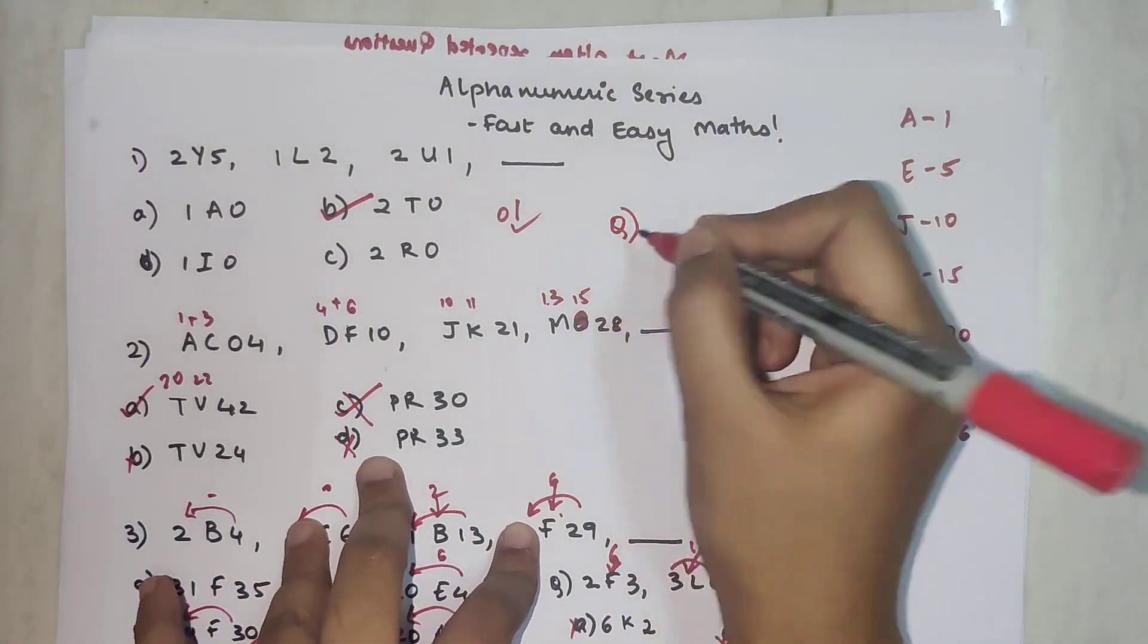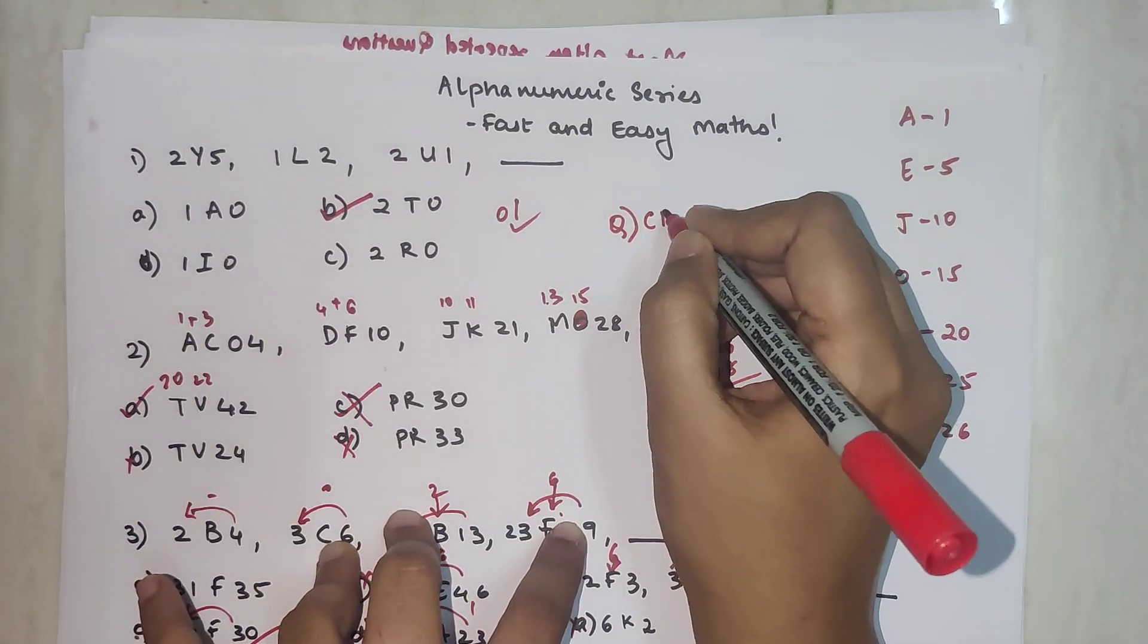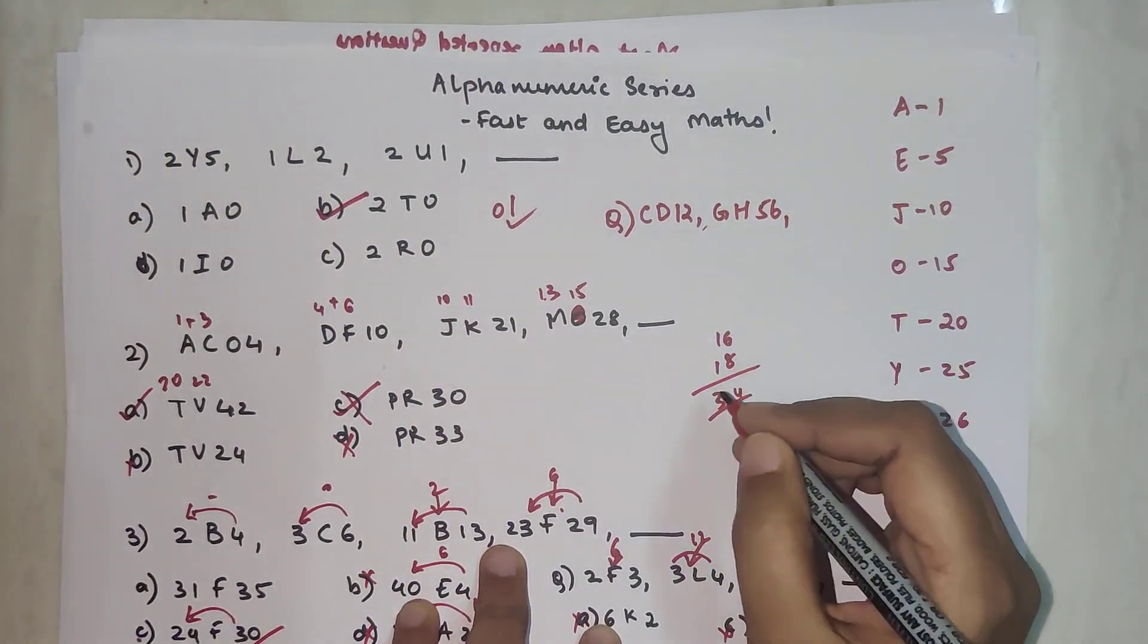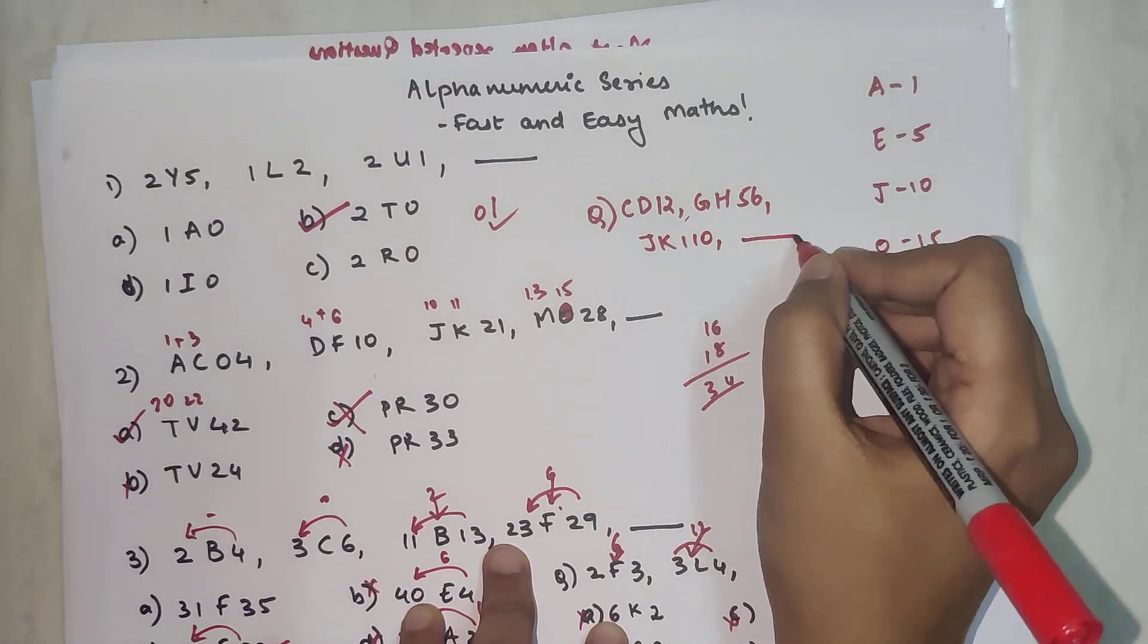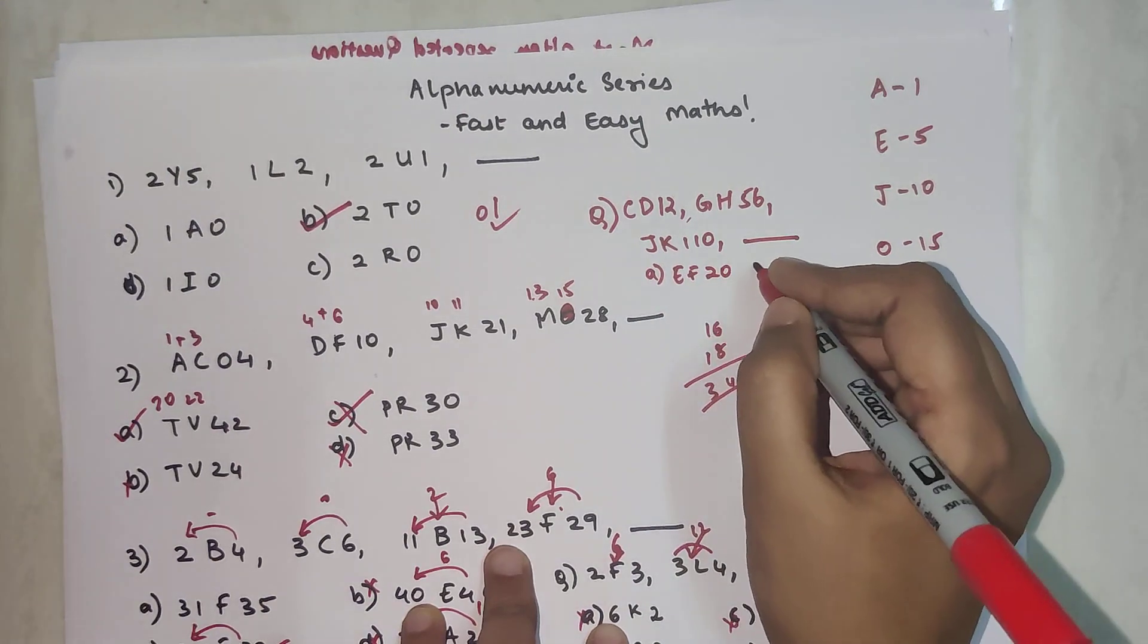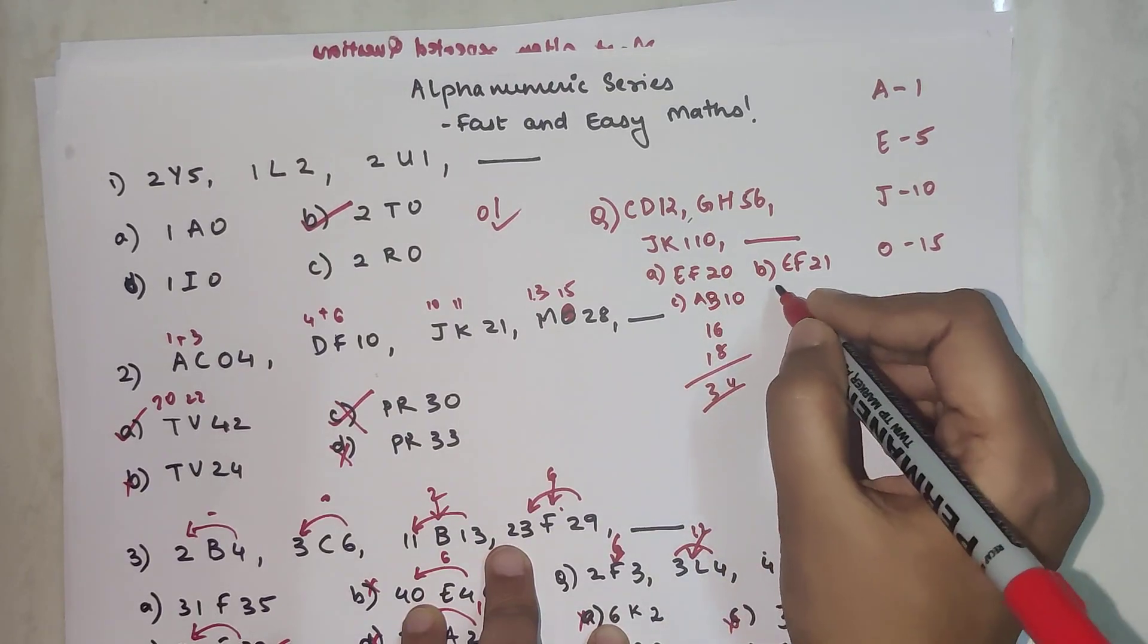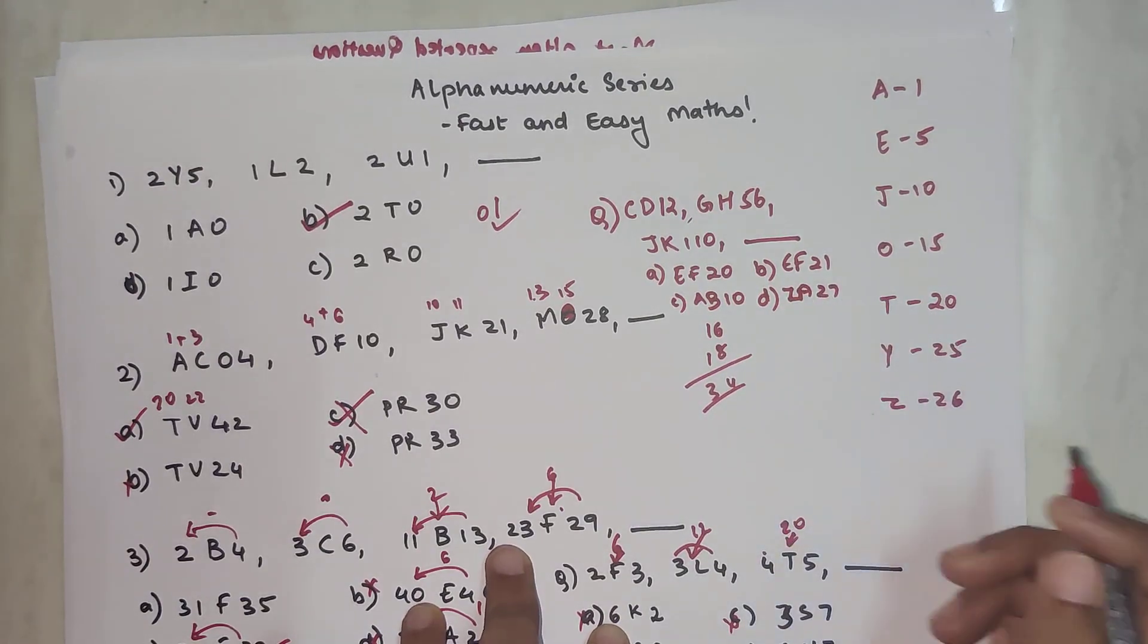Now very quickly, let's see your DIY. We have CD12, we have GH56, then we have JK110. Then what should be your next answer? Your option A is EF20. Option B is EF21. Option C is AB10. And option D is ZA27.